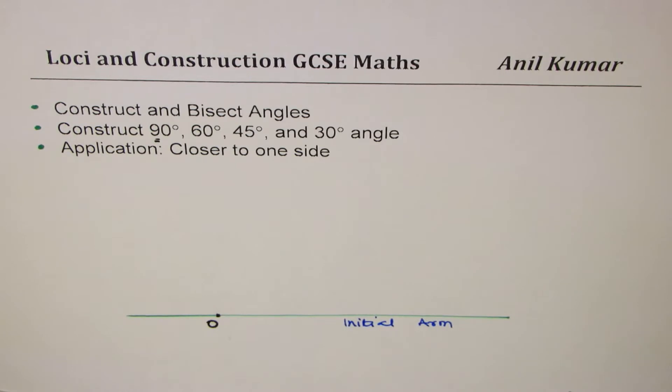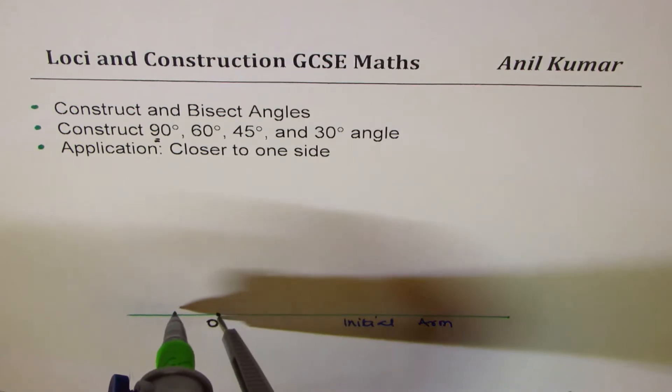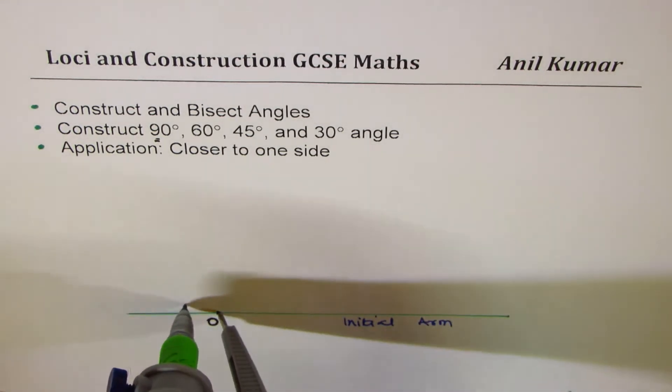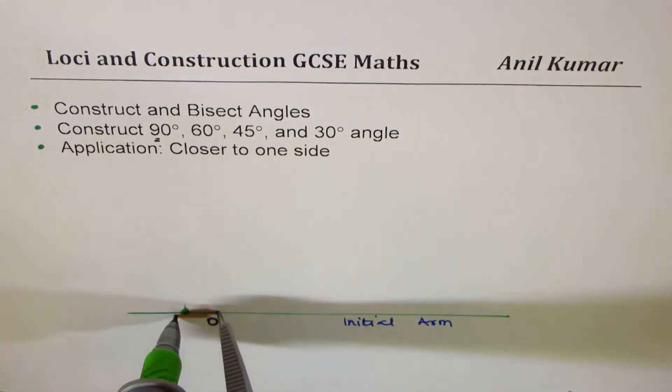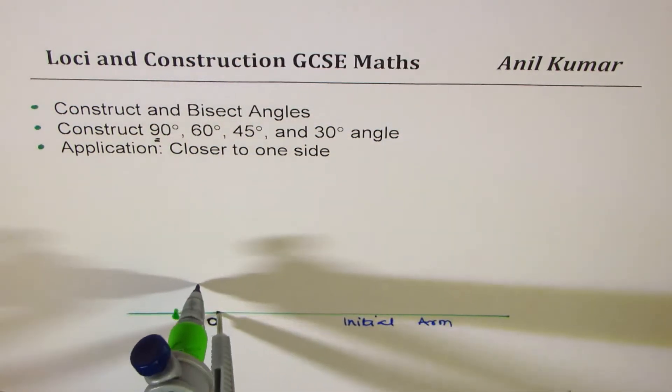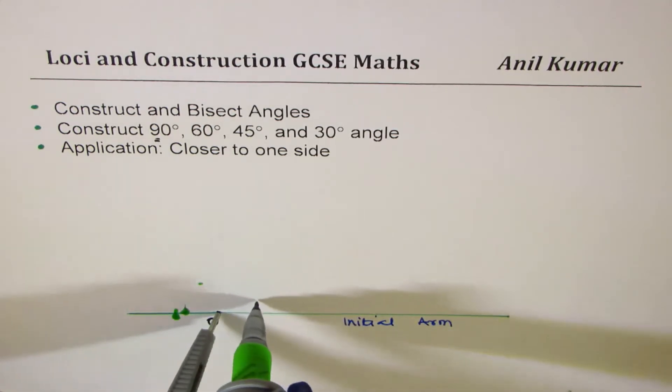To construct 90 degrees angle, there are many methods. We'll follow one which is most common. We'll also have an exercise where we'll construct right triangles over a different method. As you know, in any circle if you make a triangle you get 90 degrees. That's the concept. Now here to get 90 degrees, we'll put our compass at O, open the arc to some extent, mark it on the line.